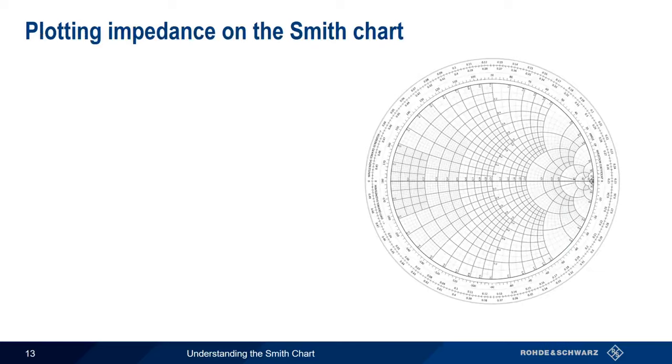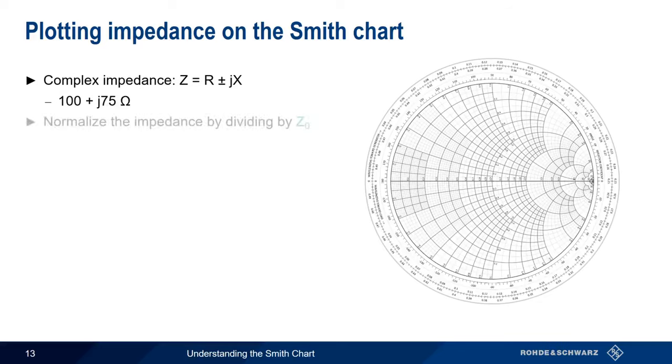Now that we know what resistance circles and reactance curves are, it's easy for us to either plot or interpret complex impedances on the Smith Chart. Let's use the complex impedance 100 plus 75j as our example. First, we need to normalize this impedance by dividing both real and imaginary parts by our source impedance Z sub 0. We'll assume the standard 50 ohms, so our normalized impedance is 2 plus 1.5j.